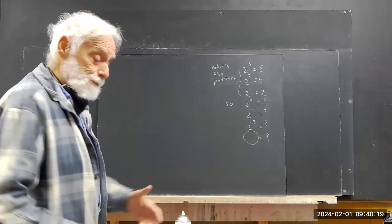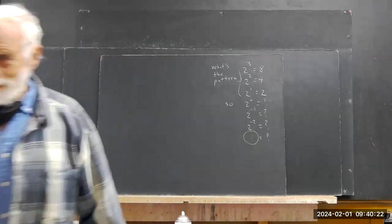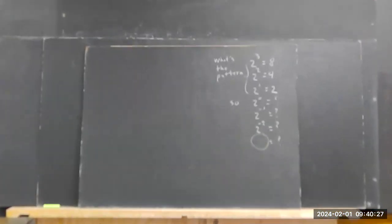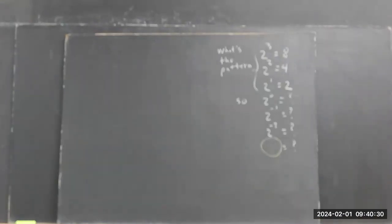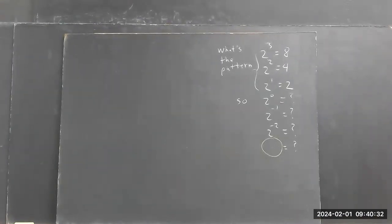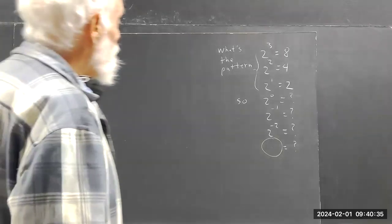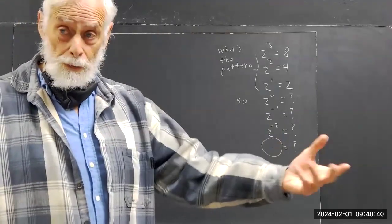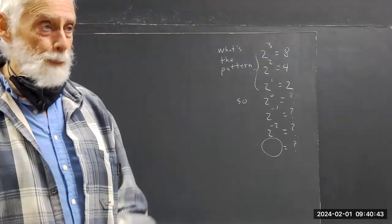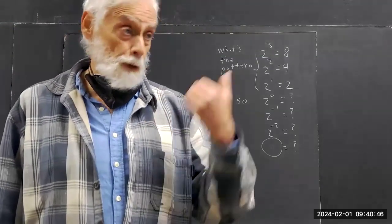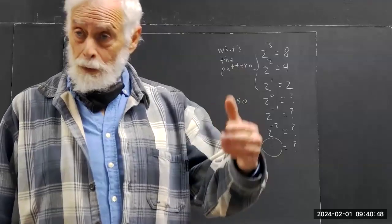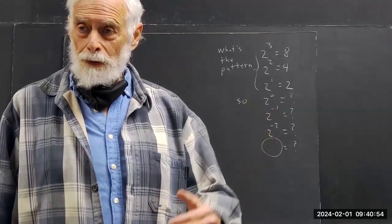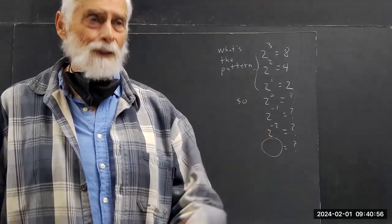If you're engaged in this as a distance student or somebody who's missed class, you should be answering these questions yourself. We go three, two, one — what comes next? Zero. Now three, two, one, zero — what comes next? You're able to tell me negative one. Then three, two, one, zero, negative one — what comes next? Negative two.